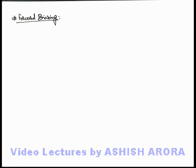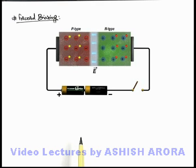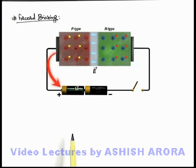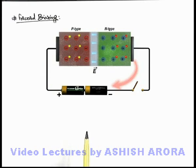Let's discuss forward biasing with a realistic situation. This is a p-n junction connected across a battery. The p side of the junction is connected to the high potential side of the battery, and the n side of the p-n junction is connected to the low potential side of the battery.